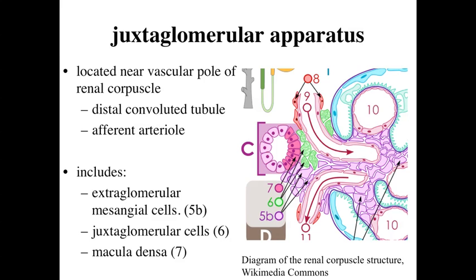The cells primarily associated with the juxtaglomerular apparatus include extraglomerular mesangial cells, labeled as 5B, which help hold the structure together, as well as juxtaglomerular cells labeled as 6. We'll also look at cells labeled 7 — those reddish cells — which are found within the wall of the distal convoluted tubule itself.